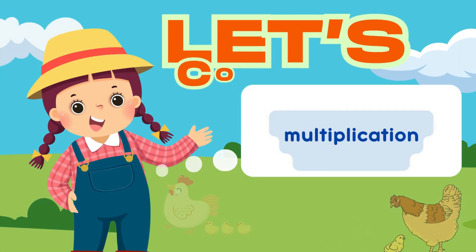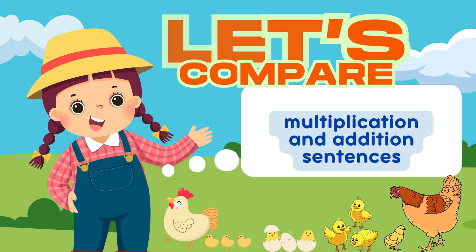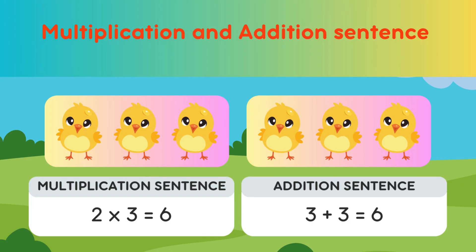So, 2 times 4 equals 8! Yay! Let's compare! Multiplication and Addition Sentences. The Multiplication Sentence is 2 times 3 equals 6, because there are 2 groups and 3 chicks inside each group. And the Addition Sentence is 3 plus 3 equals 6. Yay!